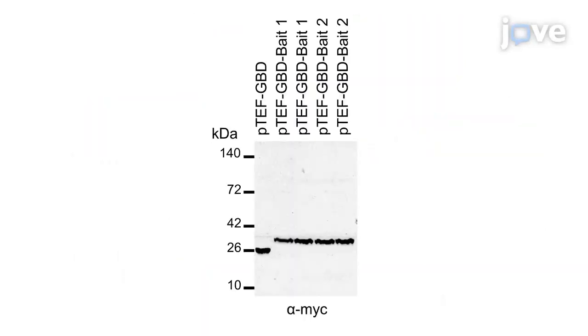This bait plasmid was used to transform MAT-A yeast, and expression of the GAL4-bait fusion proteins was verified by immunoblotting with anti-MYC antibodies.